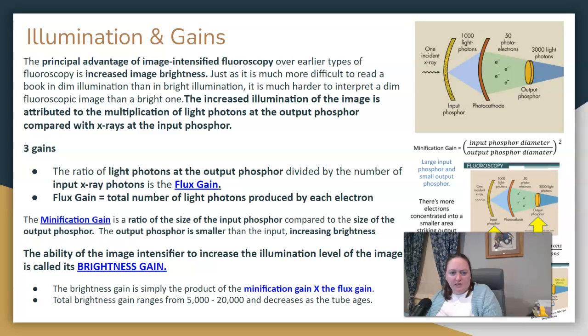Minification gain is a ratio of the size of the input phosphor compared to the size of the output phosphor. Well, the output phosphor, spoiler alert, always smaller. So we are gaining in minification, right? So remember those electrostatic lenses that focus that beam down smaller? If you think of that, we go from a large input down to a smaller output.